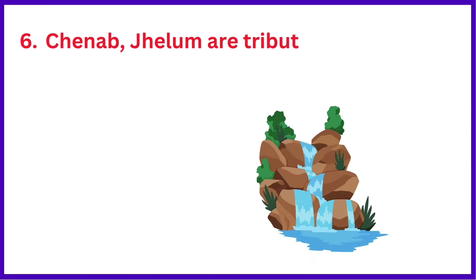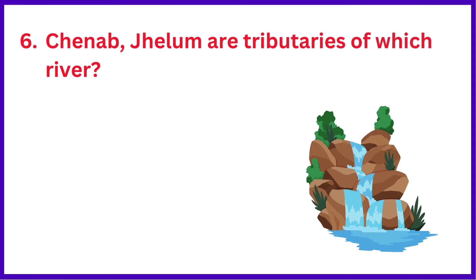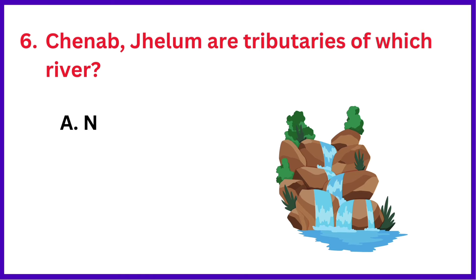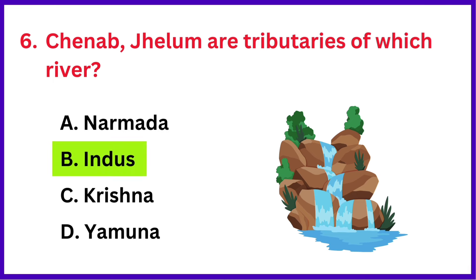Chenab and Jhelum are tributaries of which river? The correct answer is option B: Indus.